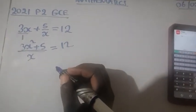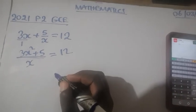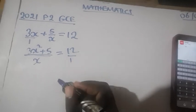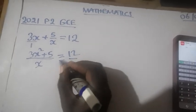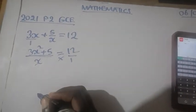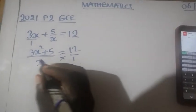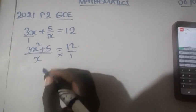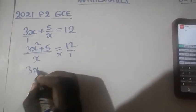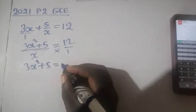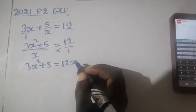Okay, so from there you have to balance up the equation by introducing the denominator 1 and you cross multiply, which is going to be 1 times 3x squared plus 5, equal to x times 12, which is 12x.